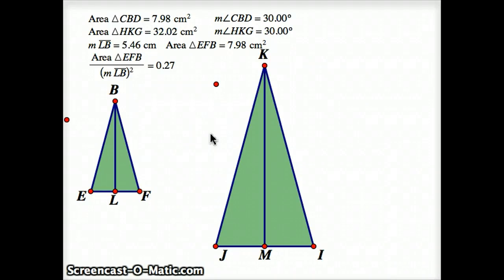Hi, I'm Gary Rubinstein, and this is part 6 of Feynman's Lost Lecture. Where we last left off, I was showing that the area of an isosceles triangle is proportional to, or varies with, the square of the height.